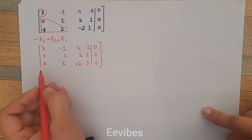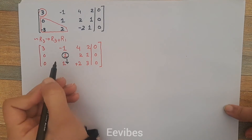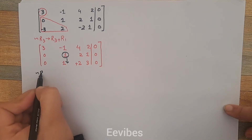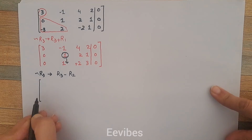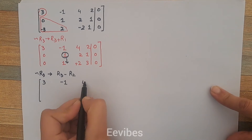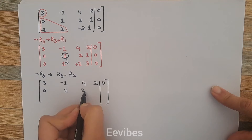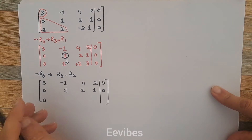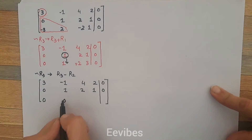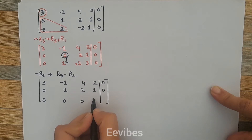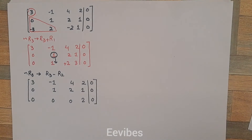In the second row, the entry 1 is our next pivot entry and we must make all entries below it equal to 0. We change R3 again with the operation R3 ← R3 - R2. Applying this: 0-0=0, 1-1=0, 2-2=0, 3-1=2, giving new R3 as [0, 0, 0, 2 | 0]. The matrix is now upper triangular, so Gauss elimination is complete.